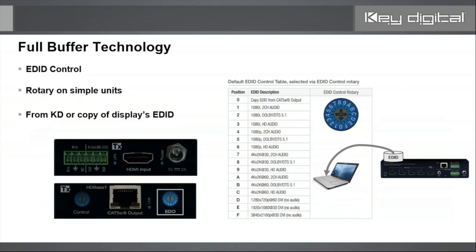Now you have hot plug. Going back to the scenario of the golden poo emoji — that source was getting overwhelmed trying to decide what video resolution and audio format to output. That could be problematic if you have multiple displays, anything other than exactly the same make and model TVs, which is not realistic. You may need different sizes, old and new. So we have another rotary — the EDID control rotary — 16 settings, giving you three options for every video resolution.